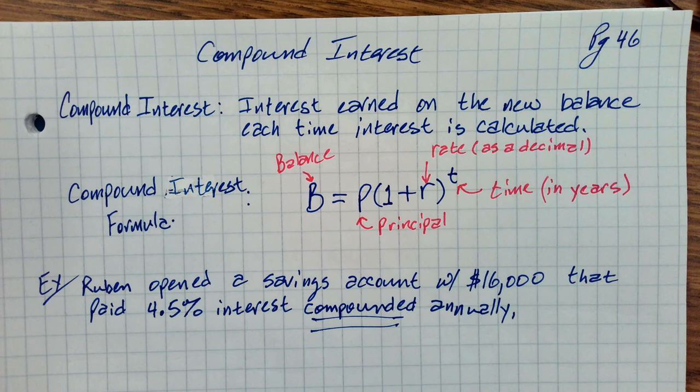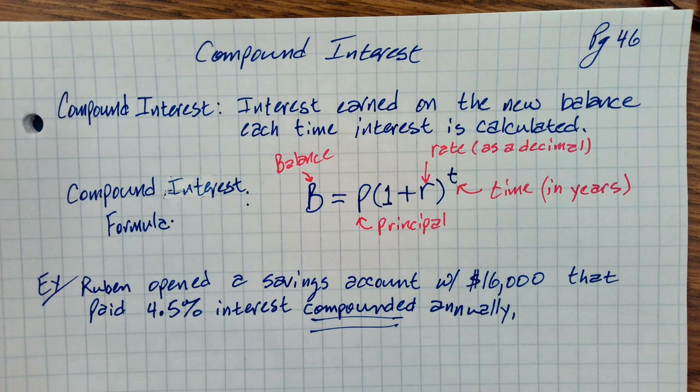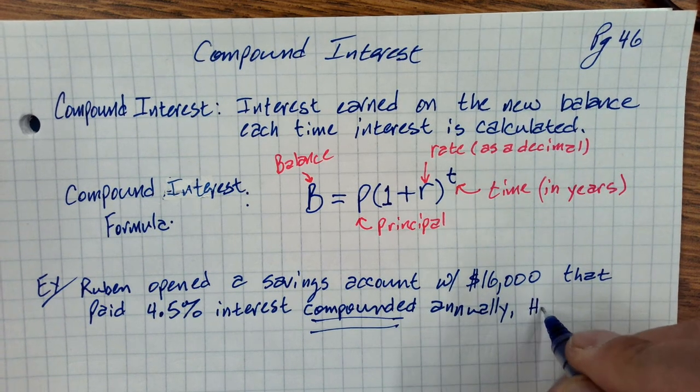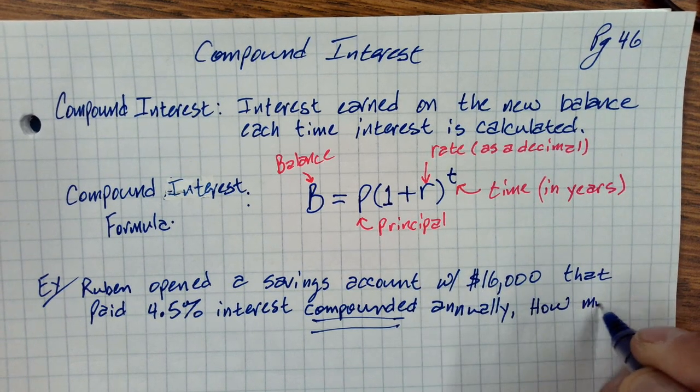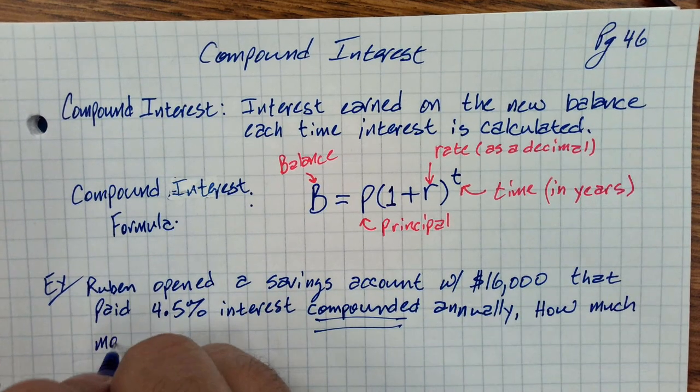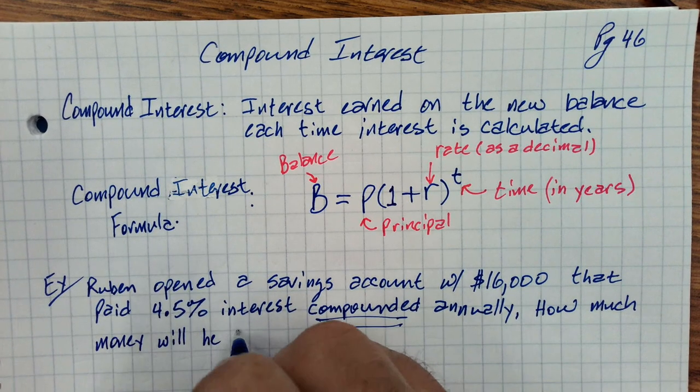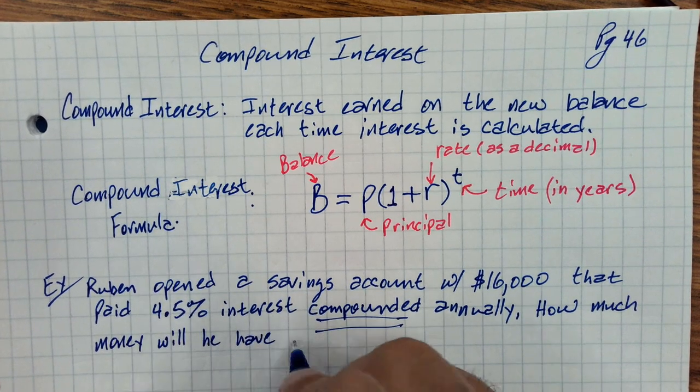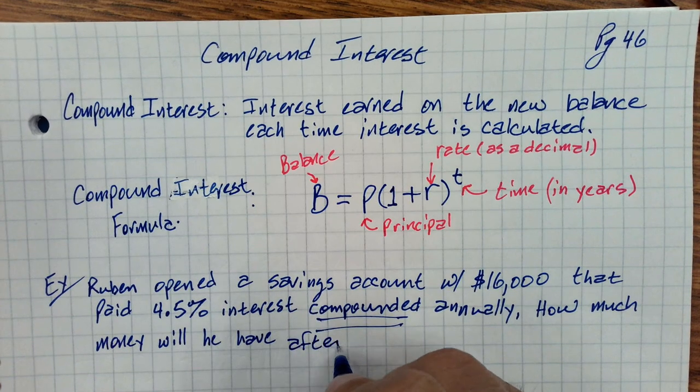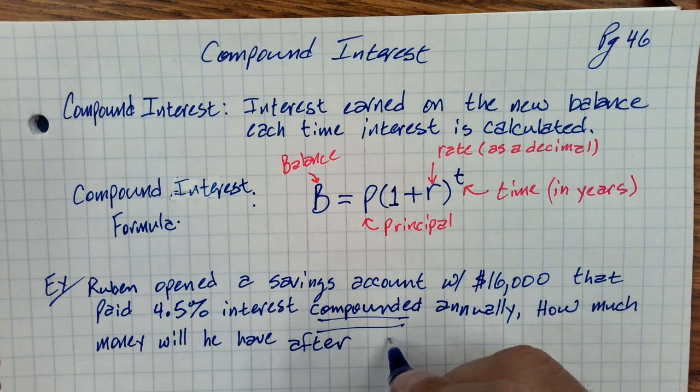So what we'd like to know is how much money will he have? Let's assume he doesn't take out any money. He just leaves $16,000 and lets it accumulate compound interest. How much money will he have after nine years?